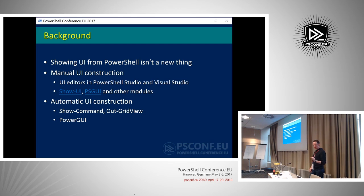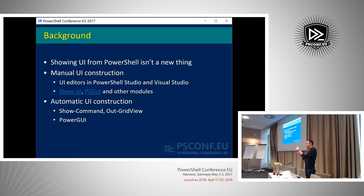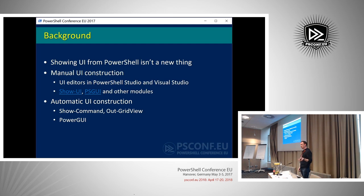We also have some level of automatic UI construction in PowerShell. ShowCommand — people generally familiar with ShowCommand — that's the bar on the right side of the ISE that shows you all the modules and commands. That's generated from PowerShell cmdlets, with fields populated based on the parameters to commands and possible values. Then you have OutGridView, which is a window that pops up and shows you a list of items and gives you the ability to filter columns based on possible values for whatever property the column came from.